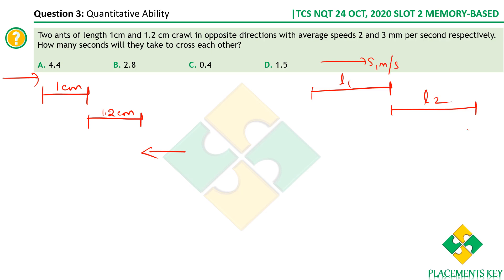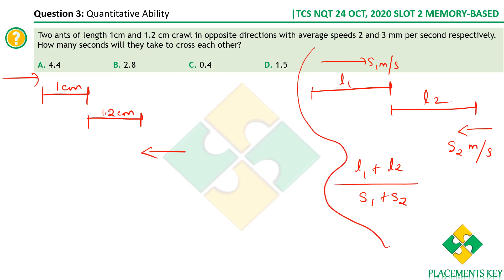For two trains traveling in opposite directions, the time to cross each other is (L1 + L2) / (S1 + S2), because relative speed when traveling in opposite directions is the sum of their speeds. Similarly here, the ants travel at 2 mm/s and 3 mm/s in opposite directions. The sum of lengths is 1 + 1.2 = 2.2 cm.